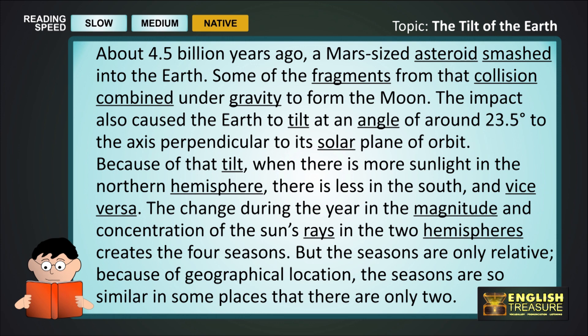Because of that tilt, when there is more sunlight in the northern hemisphere, there is less in the south, and vice versa. The change during the year in the magnitude and concentration of the sun's rays in the two hemispheres creates the four seasons.